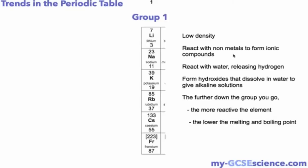It's actually unfortunately just a lot of memory work, but the key things you have to know about Group 1 is that they are all low density. In fact the first three, lithium, sodium and potassium, all actually float on water because they are less dense than water. They react with non-metals to form ionic compounds.